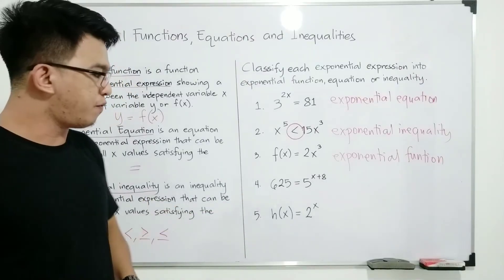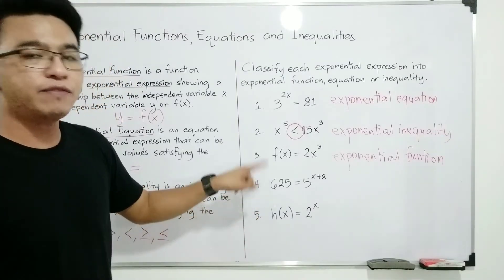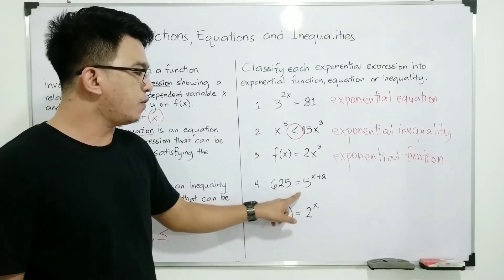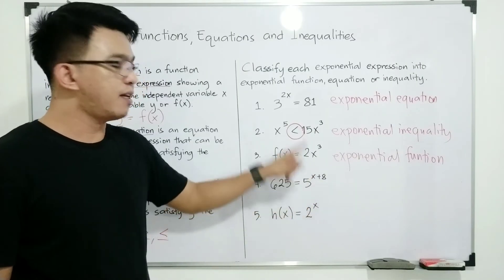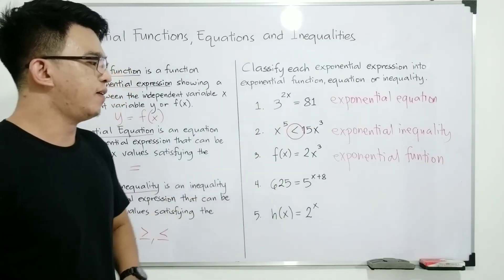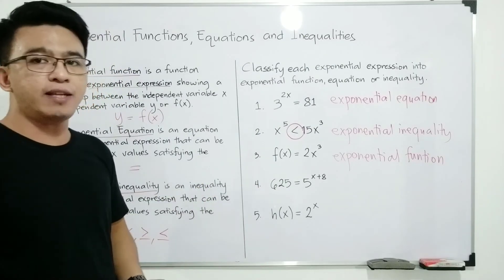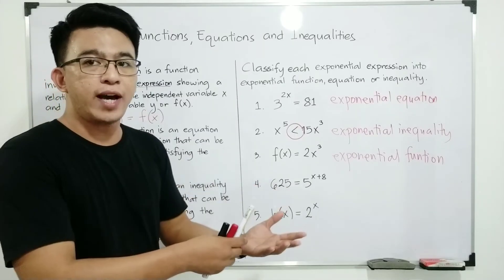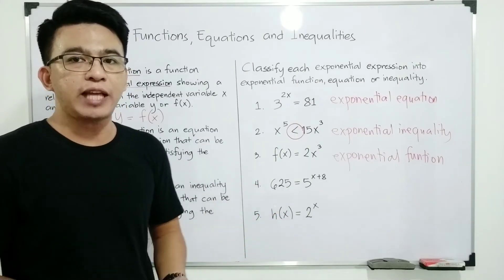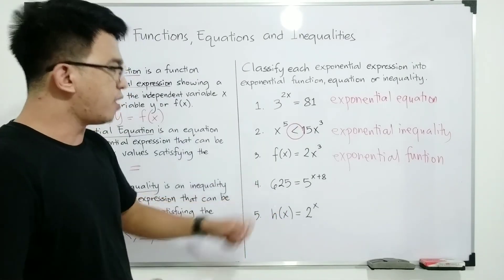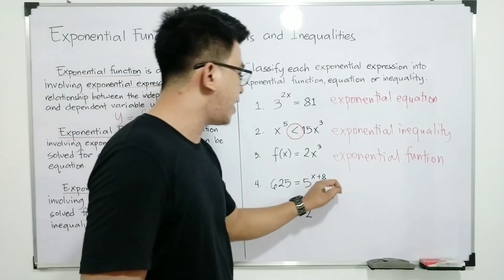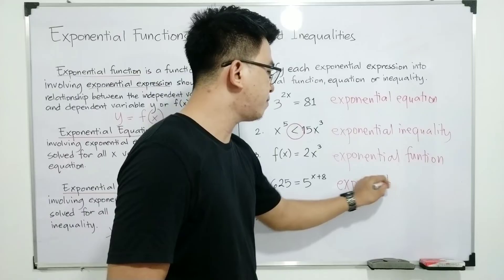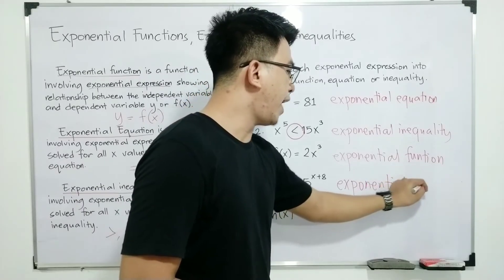Let's move on to number 4. We have 625 is equal to 5 raised to x plus 8. There is no inequality symbol, and there is no variable y or function notation f of x. Therefore, this falls under exponential equation.